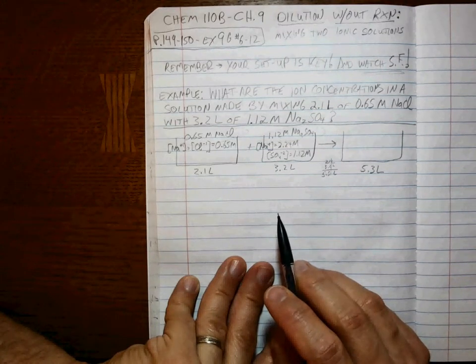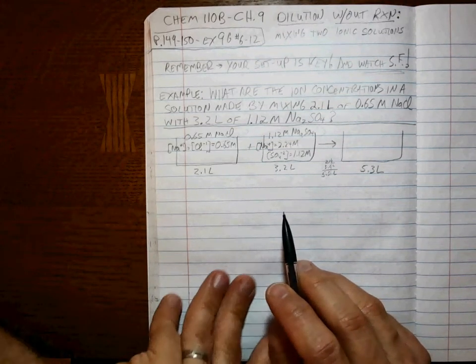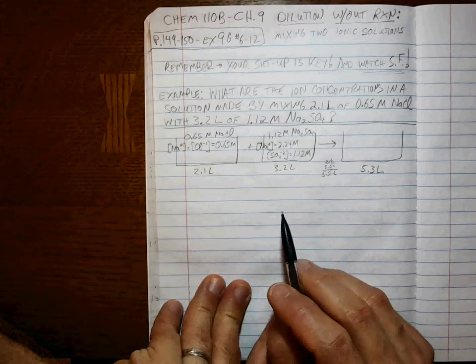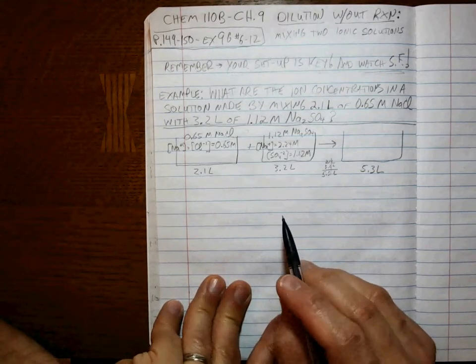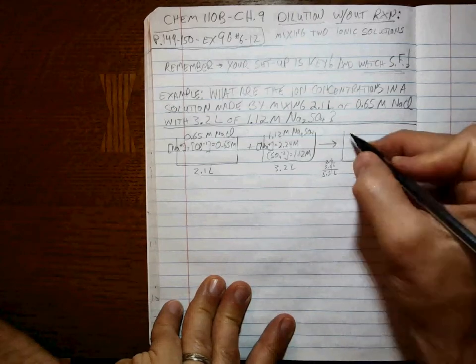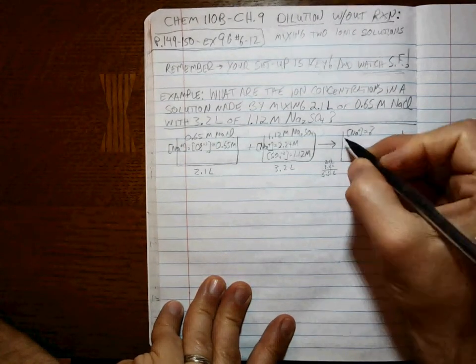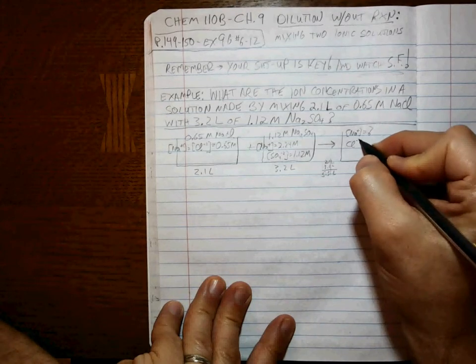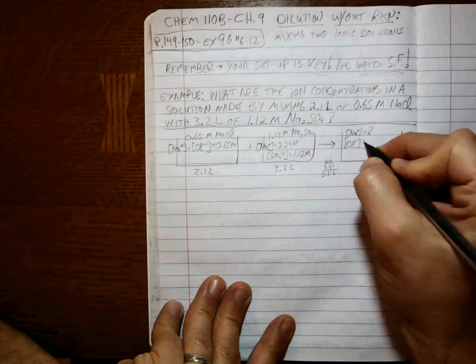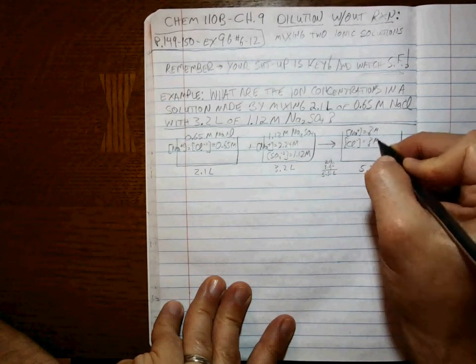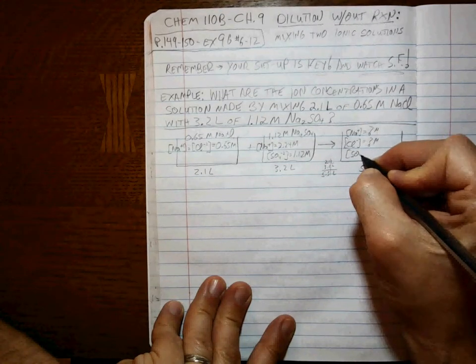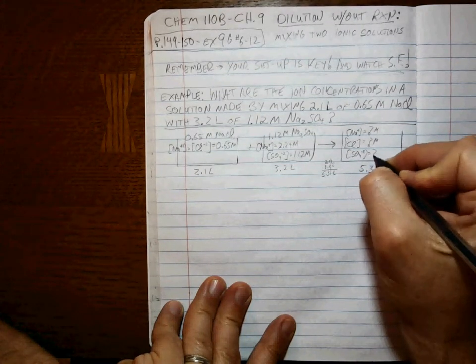The quicker you can get to these concentrations by just looking at the problem, the better off you're going to be. It will really help you get through these problems quickly, and that's going to be one of the issues, getting through the problems quickly. So what are the ions that we have here? We've got sodium ions, we've got chloride ions, and we've got sulfate ions. And we've got to figure out the concentration of each.